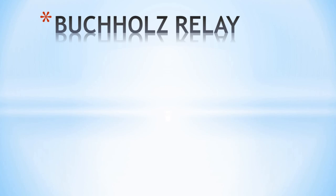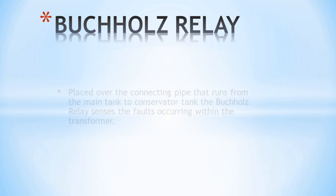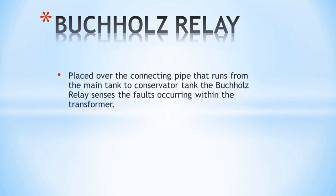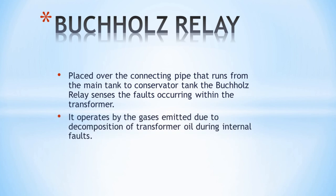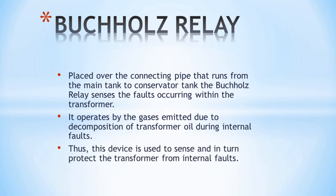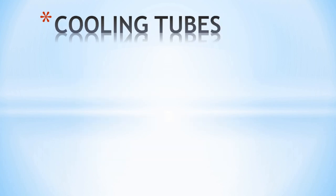Another part is the Buchholz relay. In many interviews, there is a question about the function of the Buchholz relay. The Buchholz relay is placed over the connecting pipe that runs from the main tank to the conservator. It detects internal faults within the transformer. It operates by the gases emitted due to decomposition of the transformer oil during an internal fault. The Buchholz relay is a gas-operated relay used to protect the transformer from internal faults.